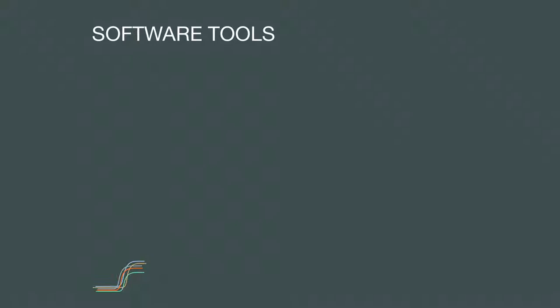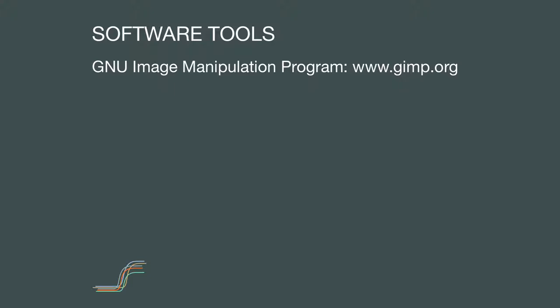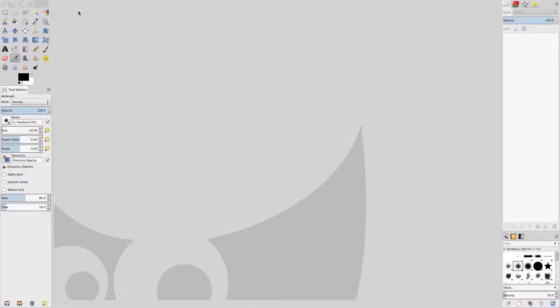Now that we've covered concepts, let's look at software tools for generating and editing image files. Please follow along on your own computer. We will be using the GNU Image Manipulation Program (GIMP), available at www.gimp.org, and OpenOffice Draw, part of the OpenOffice suite available at www.openoffice.org — both available for OS X, Windows, and Linux. We'll be using GIMP version 2.8.10, though a newer version may be available; most tools and concepts are consistent across versions.